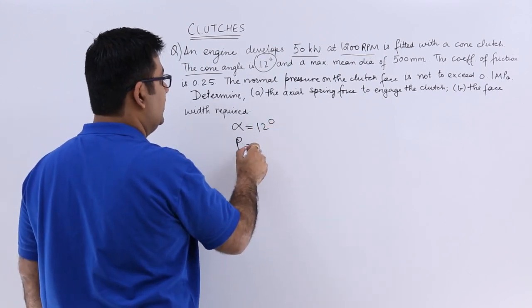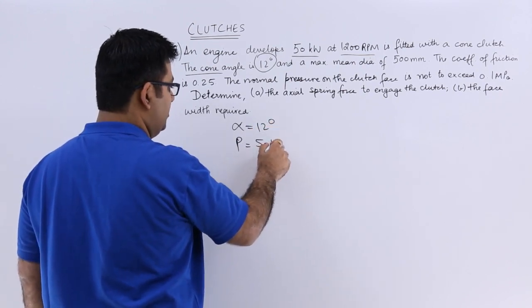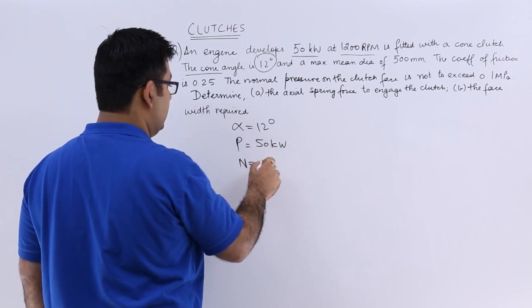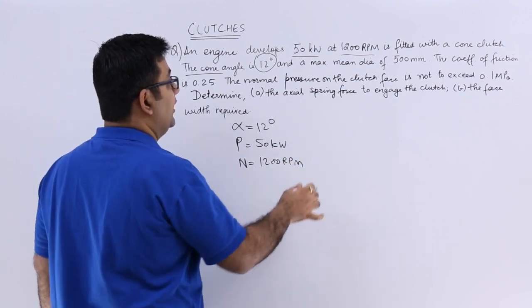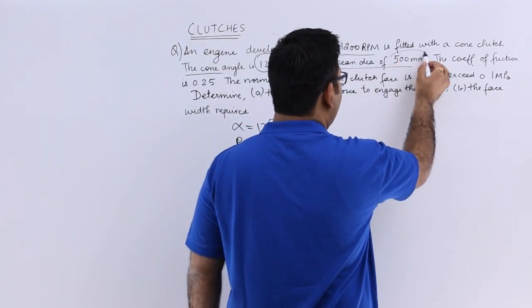Power is 50 kilowatts and RPM is 1200. And it has a maximum mean diameter of 500 mm.